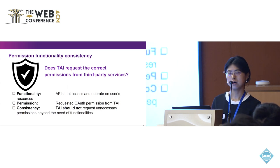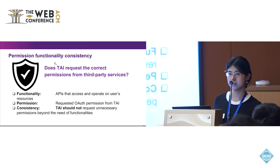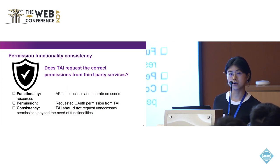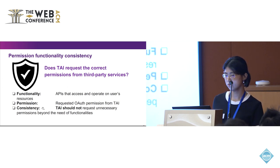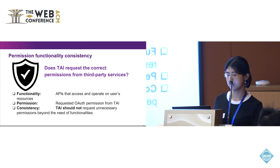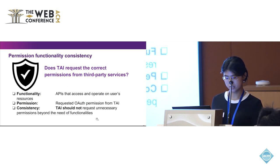That is our goal: to check the permission and functionality consistency. Does IFTTT actually request the correct permissions corresponding to its functionality? Here, functionality refers to the APIs that TIE can access and use to perform actions, while permission refers to the authorization requested from the service provider. Consistency means TIE should not request unnecessary permissions beyond its functionality.